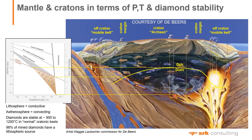The lithosphere is conductive and stable — not convecting — while the asthenosphere is moving and convecting, carrying heat in a very different way. This distinction between conductive and convecting heat transfer is absolutely fundamental in the diamond industry. Diamonds are stable at about 900 to 1200 degrees centigrade in normal cratonic yields, and 98% of mine diamonds in the world have a lithospheric source.